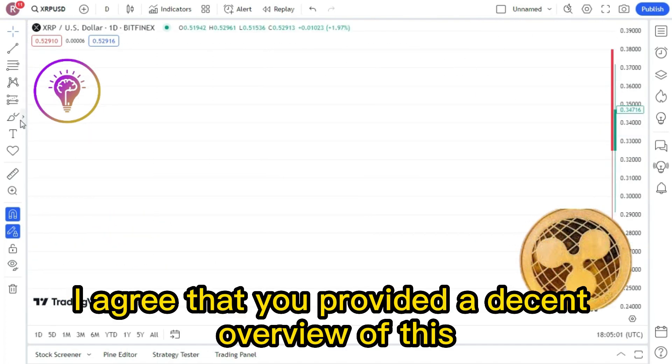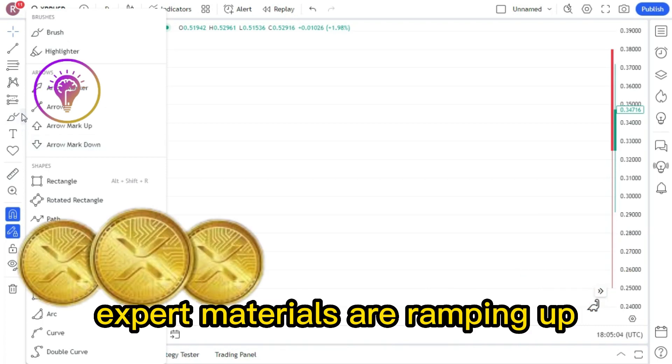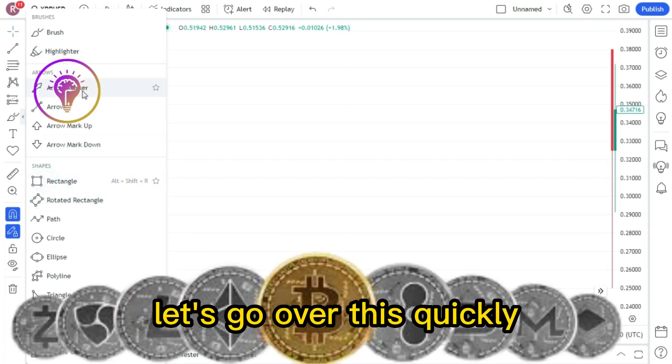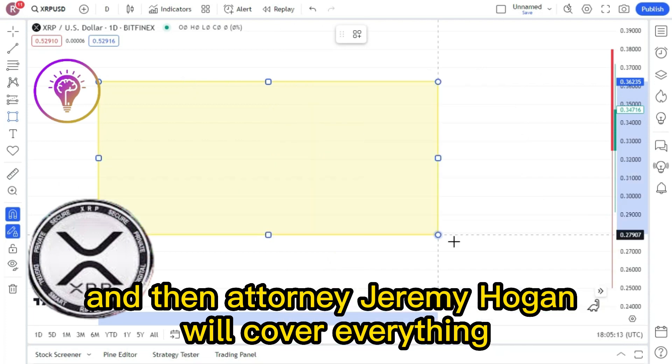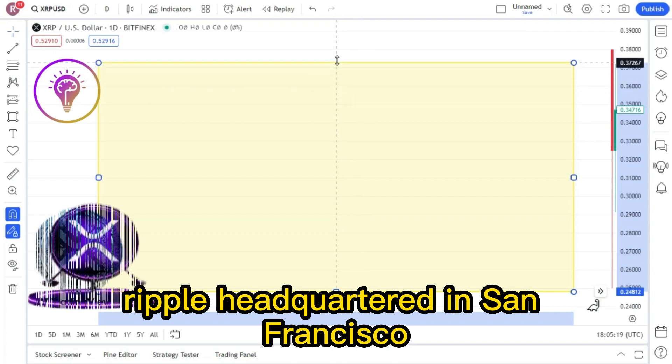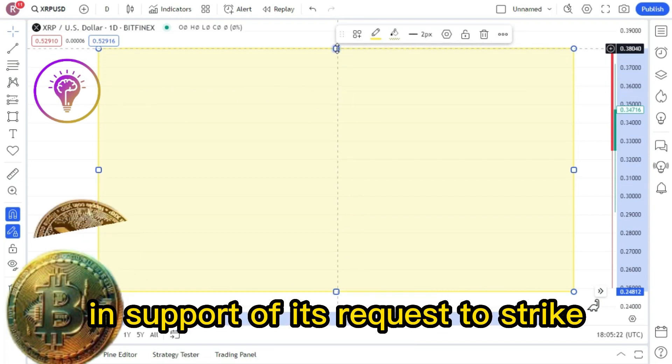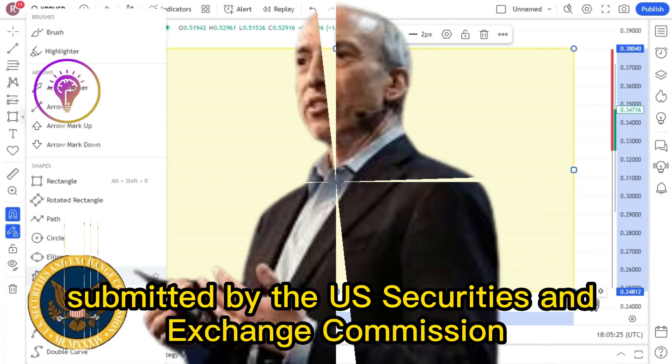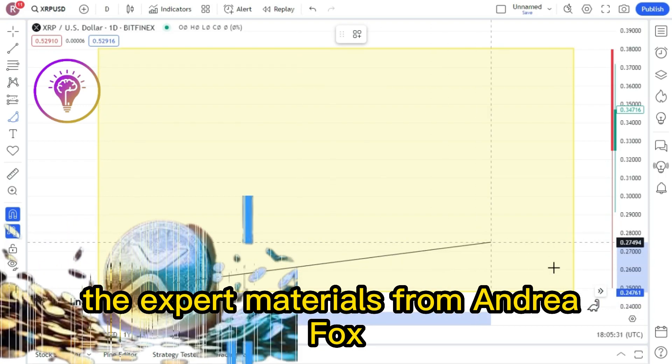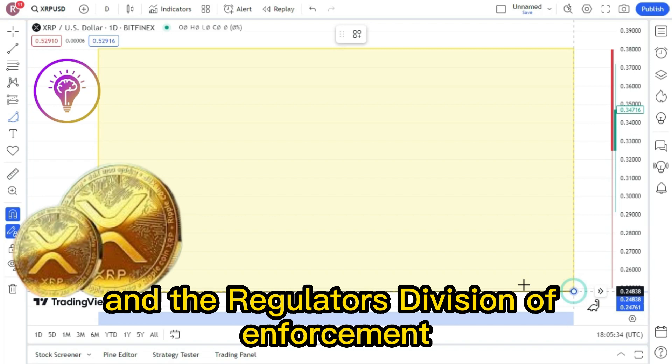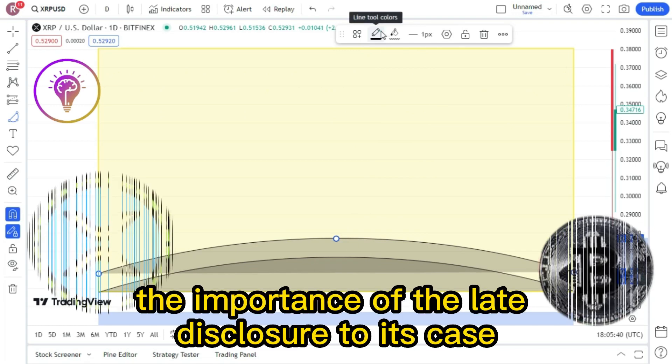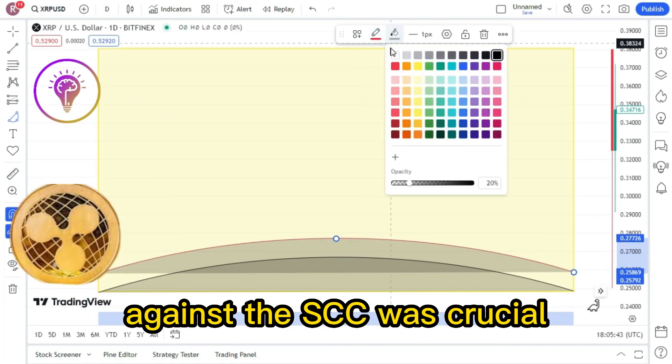I agree that you provided a decent overview of this today. Expert materials are ramping up their effort to strike SEC, as reported in the headline. Let's go over this quickly, and then attorney Jeremy Hogan will cover everything in the video. Ripple, headquartered in San Francisco, has submitted further paperwork in support of its request to strike the expert documents submitted by the U.S. Securities and Exchange Commission.